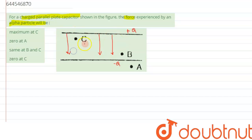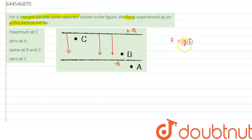When the alpha particle — which is a positively charged particle — is placed between the two plates, at either point C or point B, the force it will experience is given by the formula F = qE. Since the alpha particle is positively charged, it will move in the direction of the electric field.